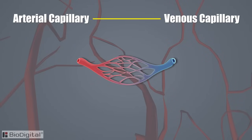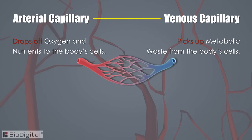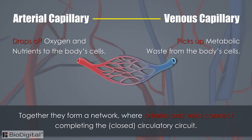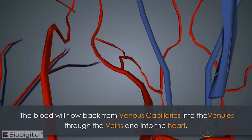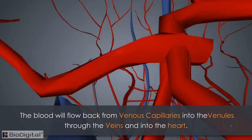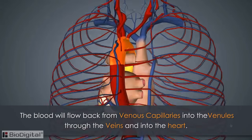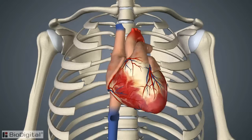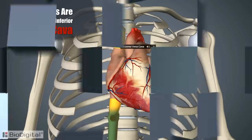The arterial side of the capillaries drops off oxygen and nutrients to the body's cells, while the venous side picks up metabolic waste from the body's cells. Together they form a network completing the closed circulatory circuit. Blood from the venous capillaries flows back to the heart through venules, which connect to larger veins carrying the blood back via the largest veins — the superior and inferior vena cava.